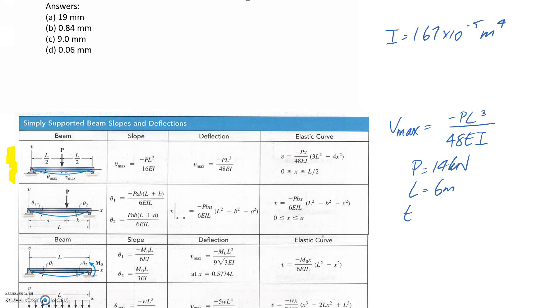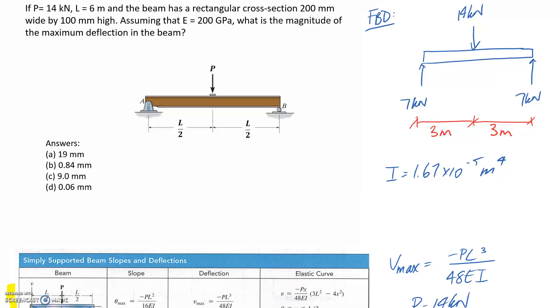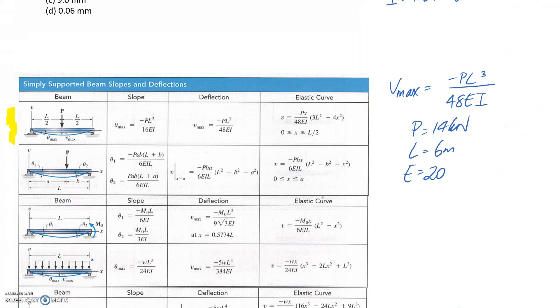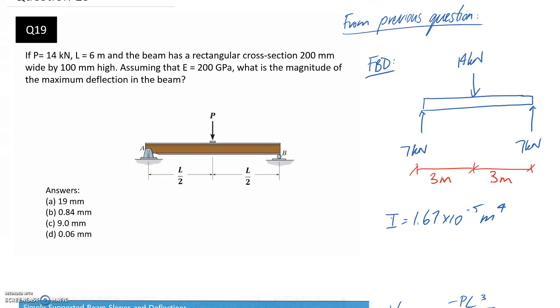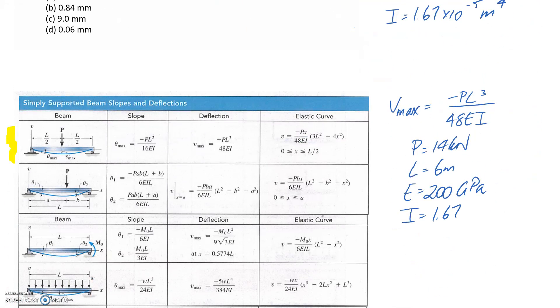E is the Young's modulus. So we were given that. It's 200 gigapascals. And the other thing we needed was I, the second moment of area. And from the previous question, this is what we calculated it as. So go back and review that question if you want to know where it came from.